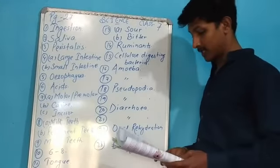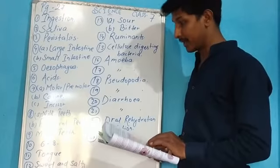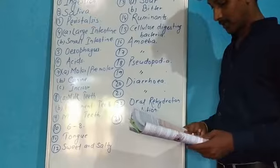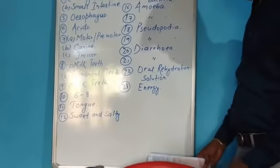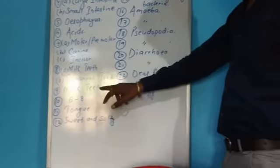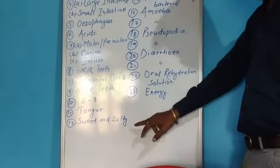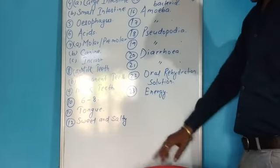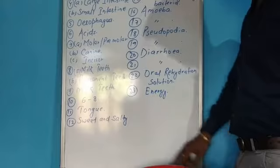Number eight: what is the name of the sets of teeth? Number A: which grow in a small baby — that is called milk teeth; and which grow in a child — that is called permanent teeth. Number nine: which teeth in human beings are replaced by permanent teeth? The milk teeth. Number ten: at what age do the milk teeth fall off in children? Six to eight years. Number eleven: which organ helps in getting the taste of food? Tongue.